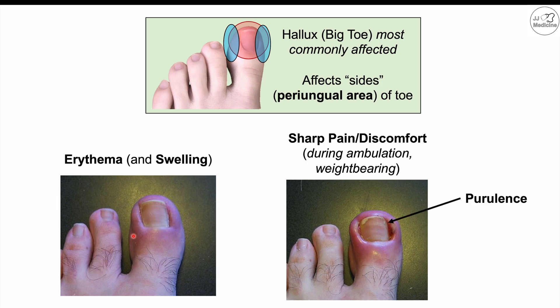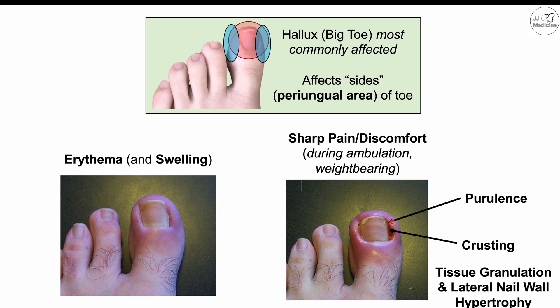In some cases there can be purulence — pus or drainage from the side of the toe — and crusting. Sometimes there can also be tissue granulation and lateral nail wall hypertrophy. The most common findings overall are erythema, swelling, and sharp focal pain on the side of the big toe when walking or weight bearing.